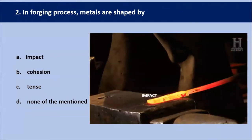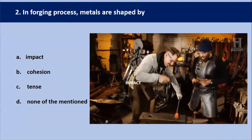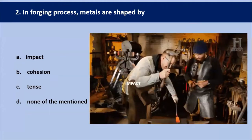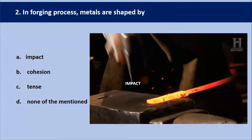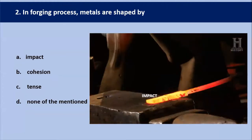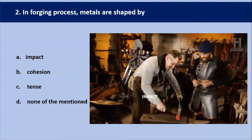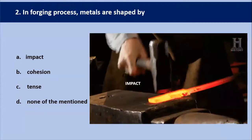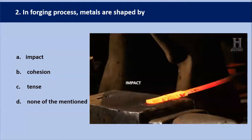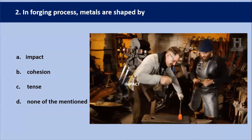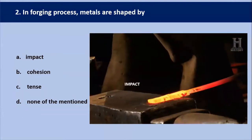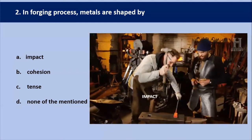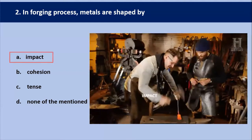In the forging process, metals are shaped by — as you can see in this diagram, we are giving impact on the heated metal. In the forging process, metals are shaped by impact. Forging is a manufacturing process which shapes the metal with the help of localized compressive force and impact force. That's why our answer is impact.